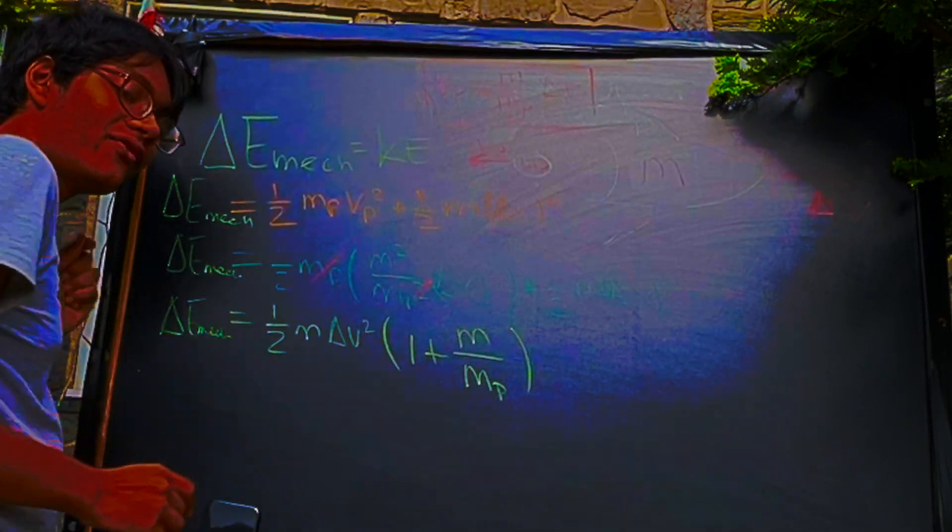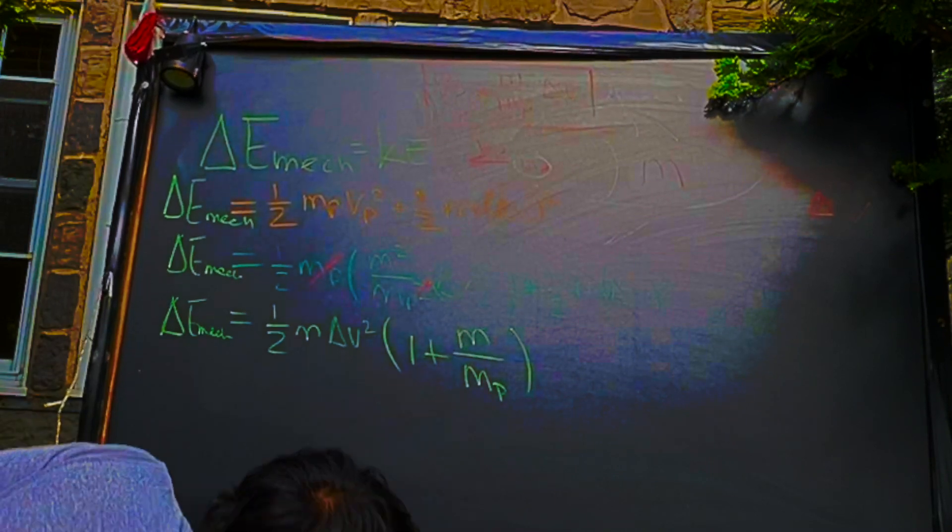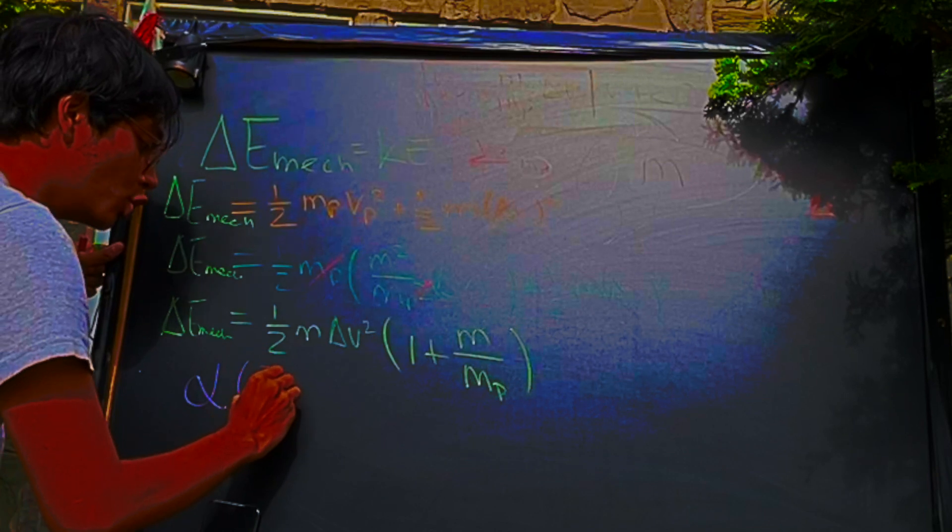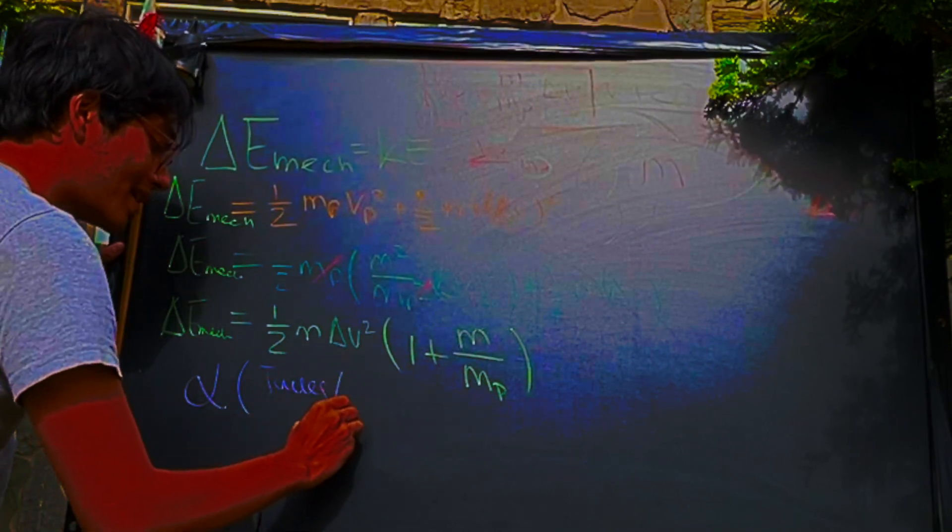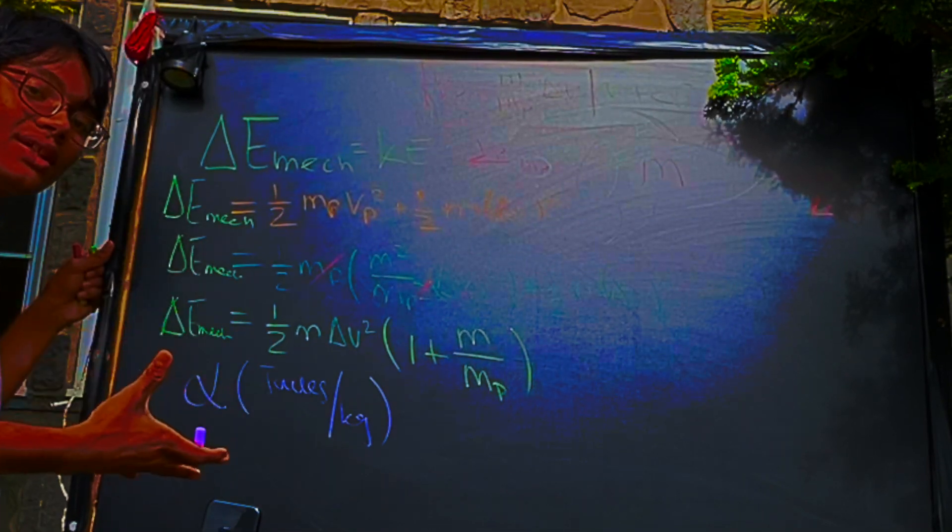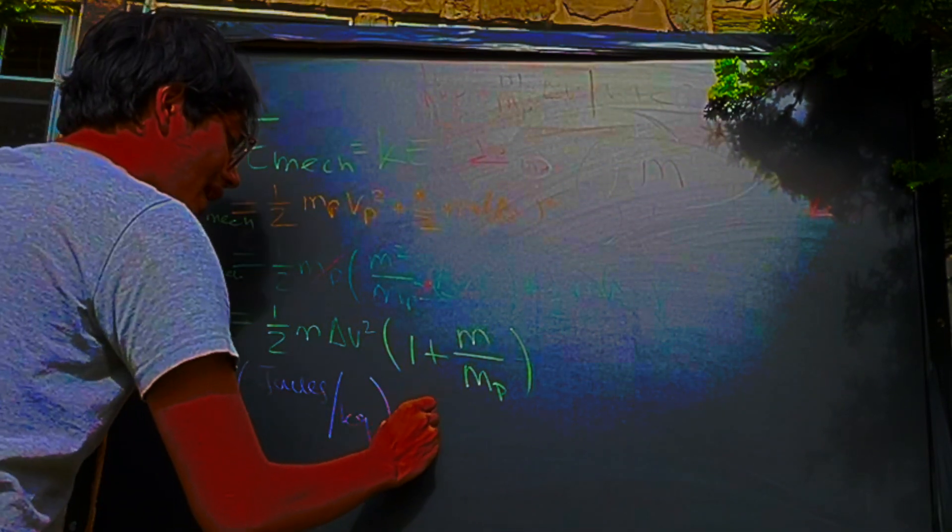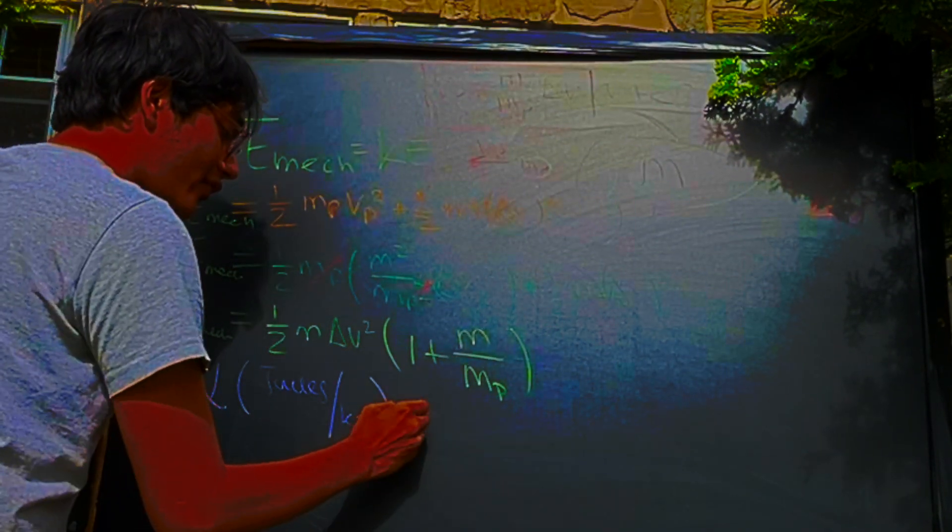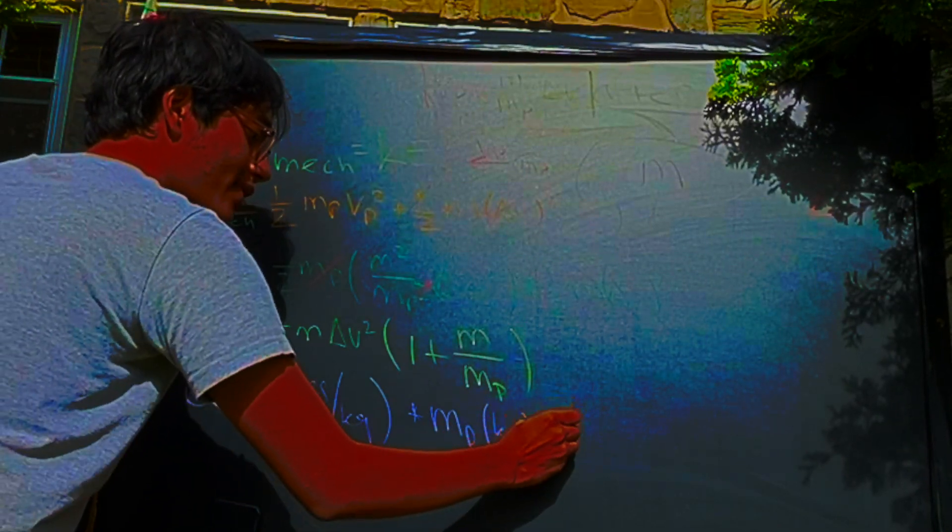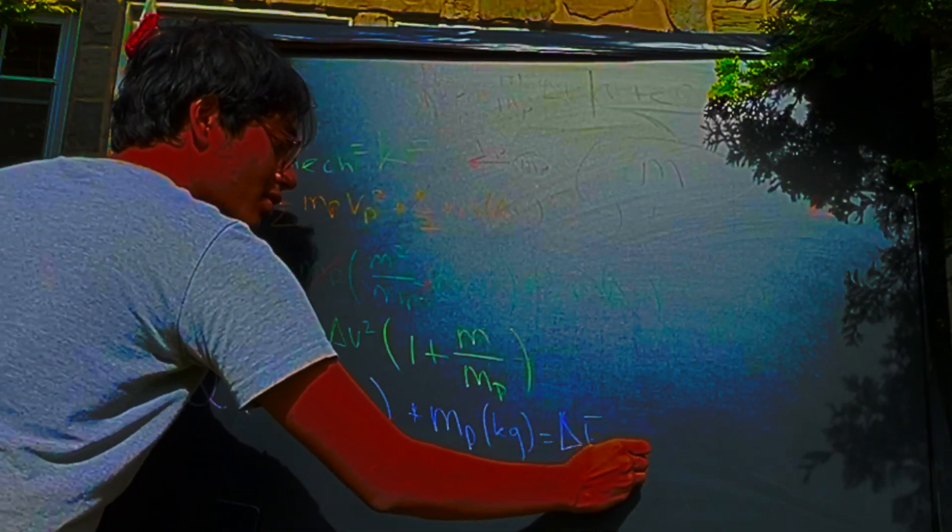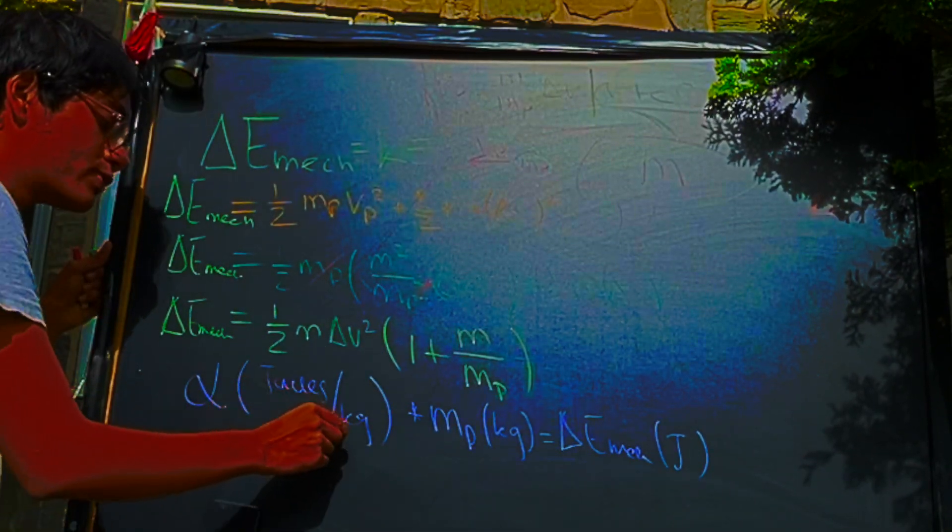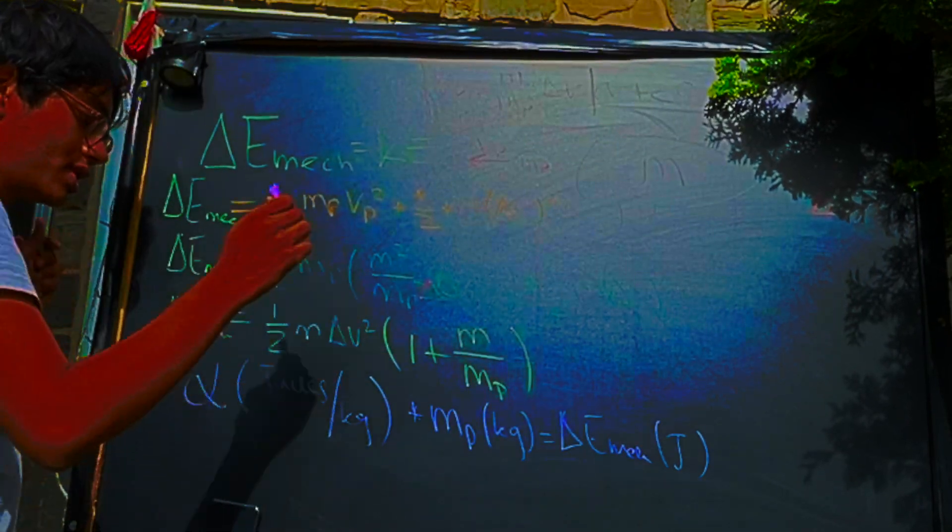Okay, so now we're going to define the fuel efficiency of the rocket. Let this constant, let's say there's a constant alpha measured in joules per kilogram. So that's the amount of energy that can be successfully converted to propellant for the rocket. Okay, so alpha is going to be equal to what? If I multiply alpha by the amount of propellant I have, which is in kilograms, I'll simply get the change in mechanical energy, which is in joules, right? You can check out the dimensional analysis. Joules per kilogram times kilogram, so it gives us joules.